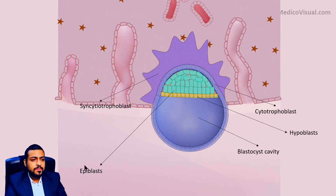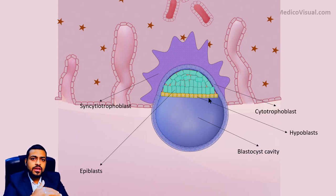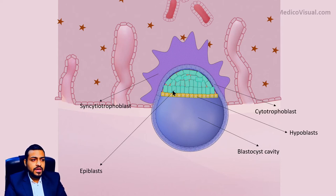The hypoblast cells are lying dorsal to or posterior to the blastocyst cavity. This pole of the embryo — the embryonic pole — will become the back of the embryo, so this is the dorsal side.